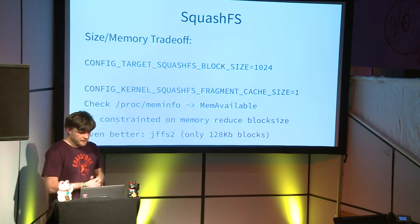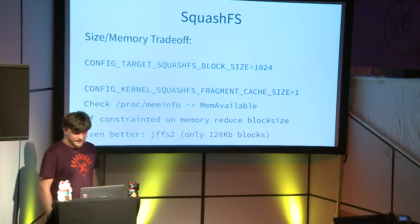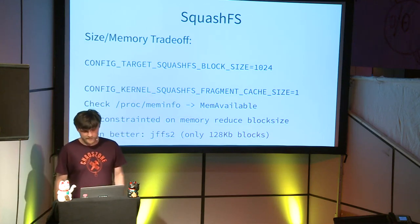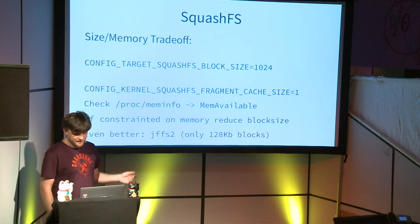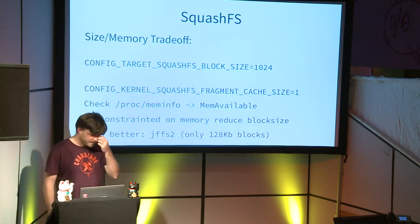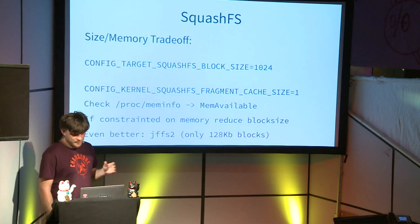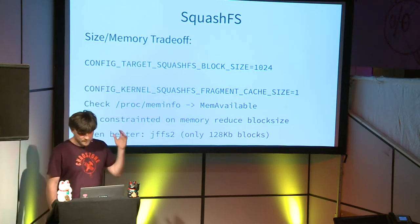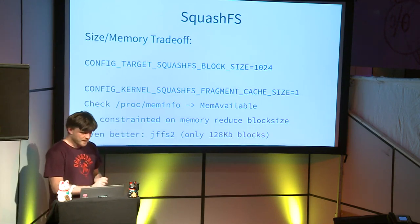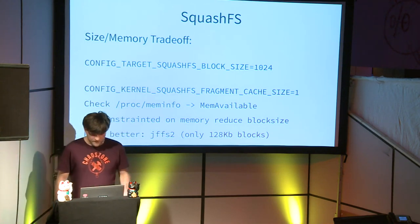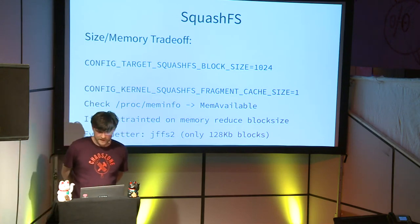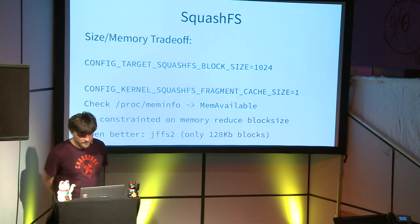You can tune the block size from 64 kilobytes up to 1 megabyte, but there's a big trade-off: when the device is running, this compressed data needs to be decompressed in memory. Until recently, the default was to keep three 1-megabyte blocks decompressed in memory, which consumed up to 7–8 megabytes just for data. So you also need to set the fragment cache size to 1 — this makes booting slower, but booting speed isn't critical for mesh networks.